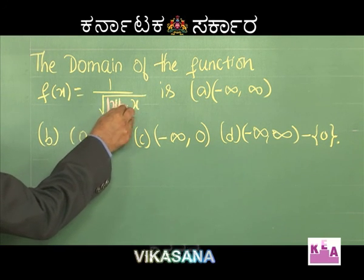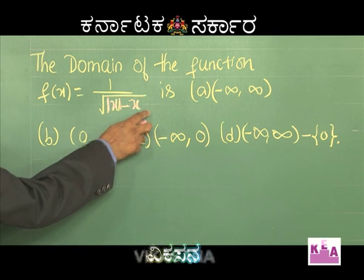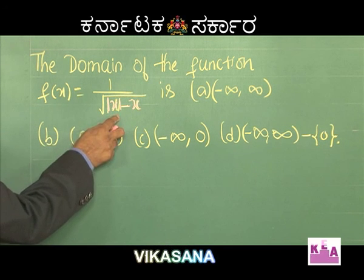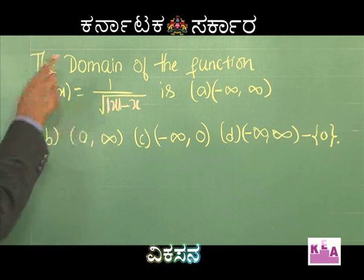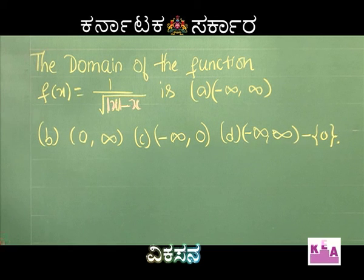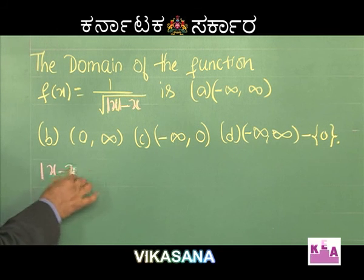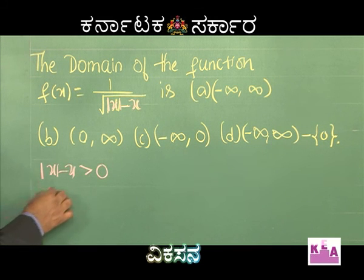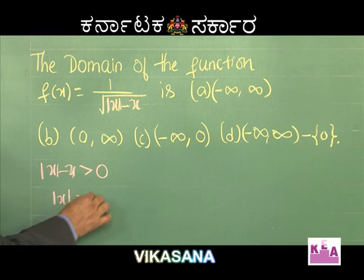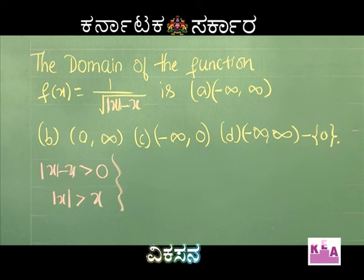The expression |x| minus x must be positive. It should not be 0, because if it is 0, f(x) tends to infinity. Also, root of anything must be positive, otherwise you get an imaginary number. Therefore |x| minus x must be positive — that is condition number one. This means |x| must be greater than x.